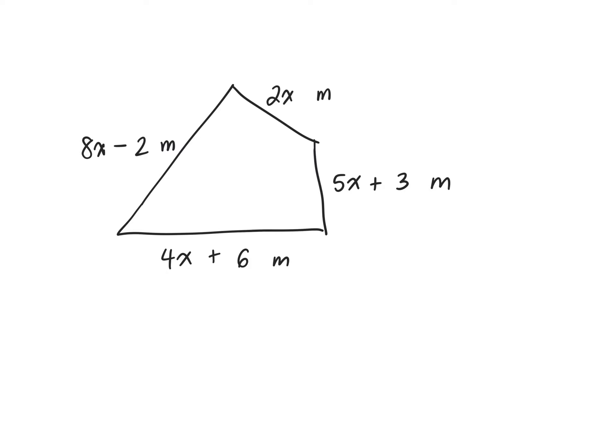What we're doing in this question is we're trying to find a simplified expression for the perimeter of this shape. This here just represents meters, that's just the unit, so when you write your final answer you're going to write meters. So that doesn't get added into your expression until the end.